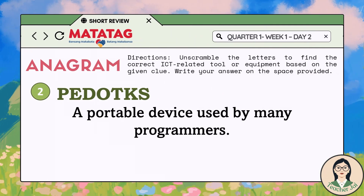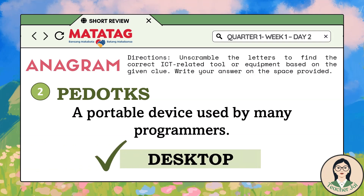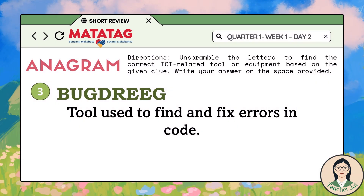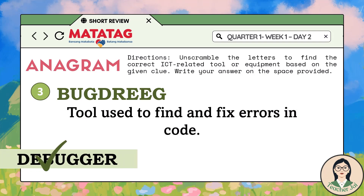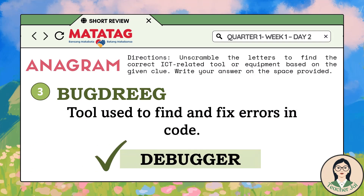Number 2: PEDOTKS — a portable device used by many programmers. The answer is desktop. Excellent. Number 3: BUGDRAEG — a tool used to find and fix errors in code. The answer is debugger. Exactly.